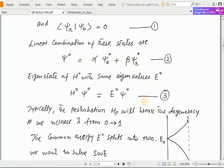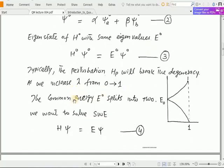This eigenstate is of the same eigenvalue E^0. So the Schrödinger wave equation for the ground state is written as H_0 ψ^0 = E^0 ψ^0. Typically the perturbation H_p will break the degeneracy as we increase lambda from 0 to 1. As you know the Hamiltonian H can be written as H_0 plus H_p multiplied by lambda.